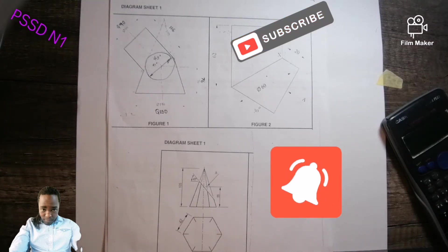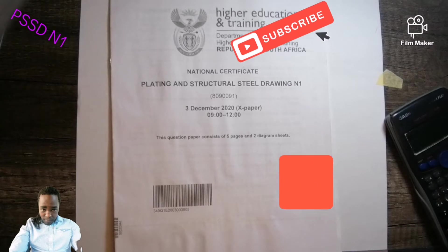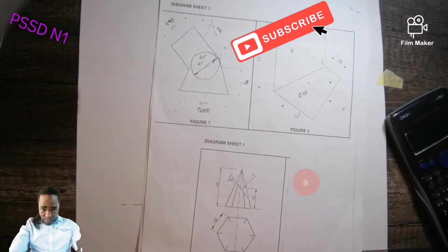Right, hello ladies and gentlemen. I want us to do figure one of PSSD N1, which is planting and structural steel drawing, boiler maker drawing N1. I want us to do figure one.